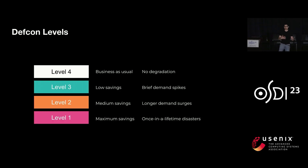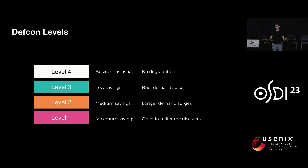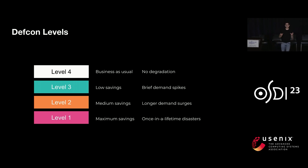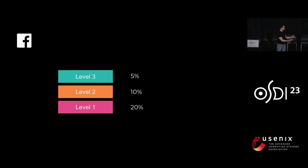Because different knobs can have different levels of impact, we classify them into four levels. DEFCON level four is business as usual — no degradation. DEFCON level three achieves low savings and is used for brief demand spikes. DEFCON level two yields a medium level of savings for larger demand surges. DEFCON level one yields the most resource savings but also has the highest impact on user experience, so we typically only use it for once-in-a-lifetime disasters. These levels are anchored in real data for the Facebook app at Meta, and they help product teams figure out what resource savings to target at a given level of impact.